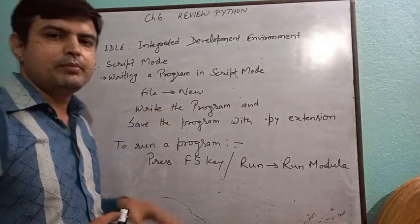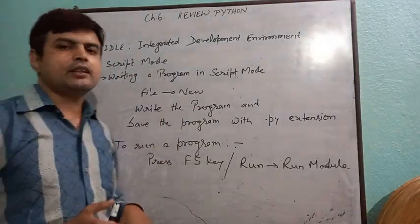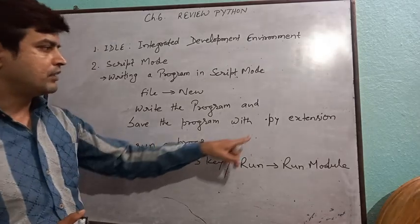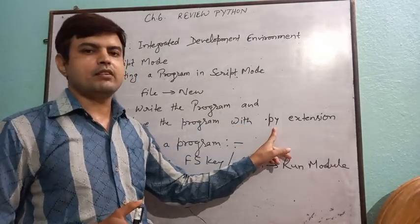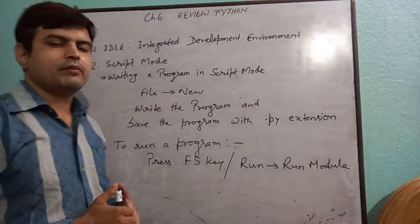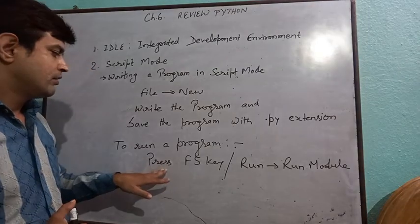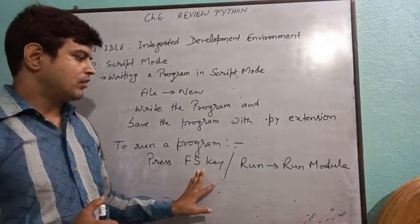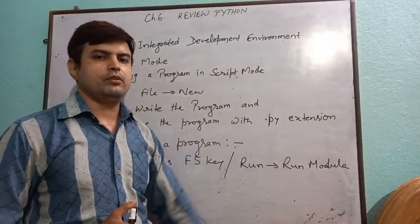A new file will be displayed. Then write the program. After writing the program, we will save the file with the .py extension. .py is the extension of a Python file. After saving the file, we can run the file by using the F5 key or by clicking on the Run menu and selecting Run Module.